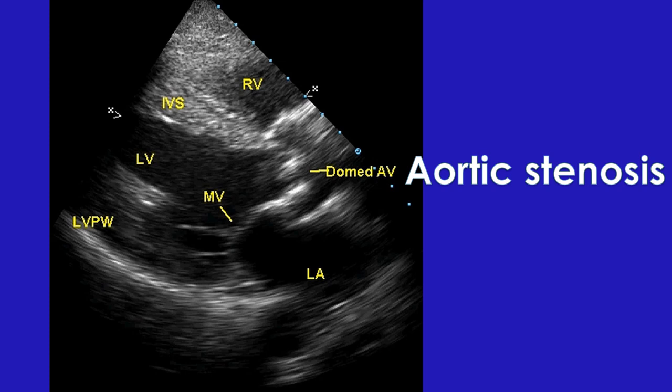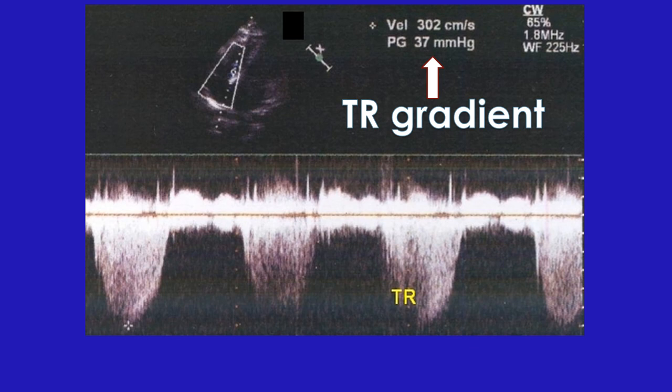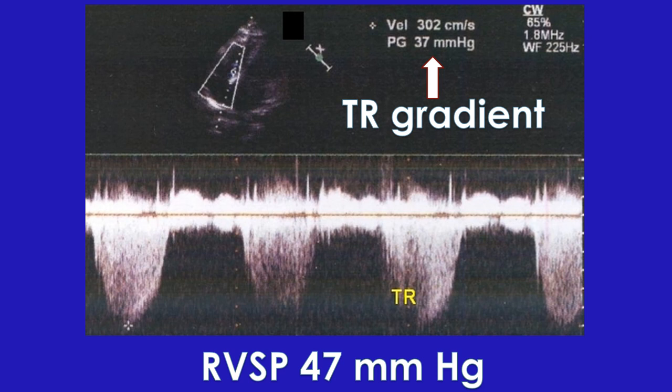Pressure gradients across the valves will be mentioned when the valve is narrowed, and the gradient increases as the severity of narrowing increases. When there is a leak in the tricuspid valve, the pressure difference between the right ventricle and right atrium can be calculated, usually mentioned as the TR or tricuspid regurgitation gradient. A nominal value of 10 is added to this gradient and mentioned as the estimated right ventricular systolic pressure or RVSP. An elevated RVSP implies increased pressure in the pulmonary artery — known as pulmonary hypertension — if the pulmonary valve is not obstructed.